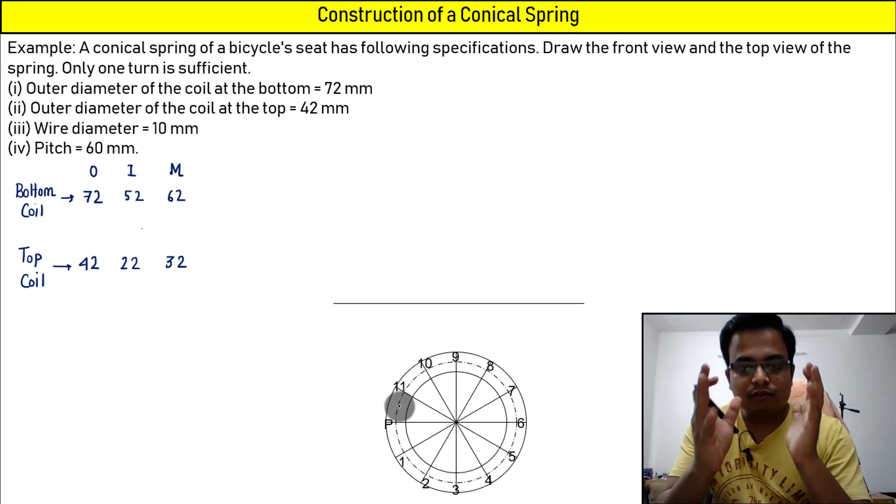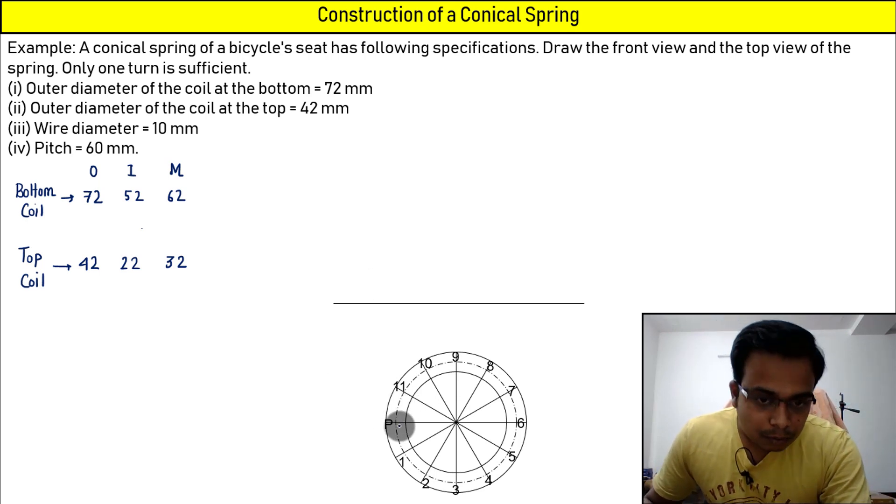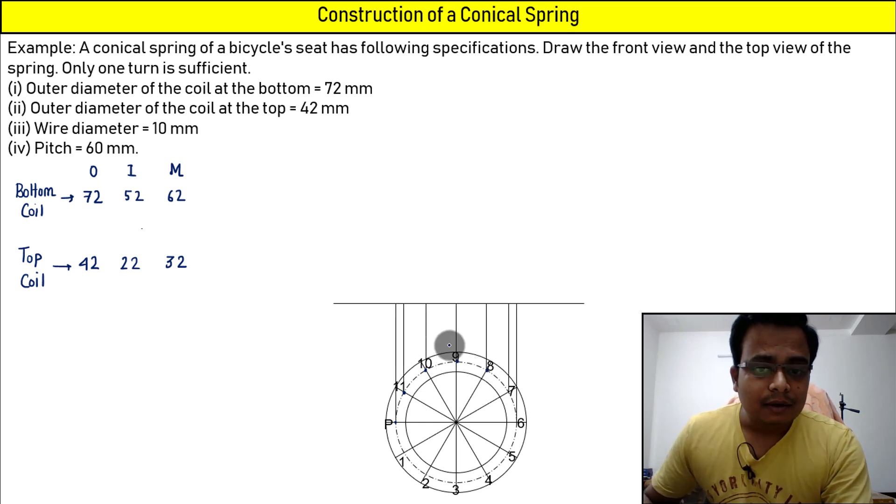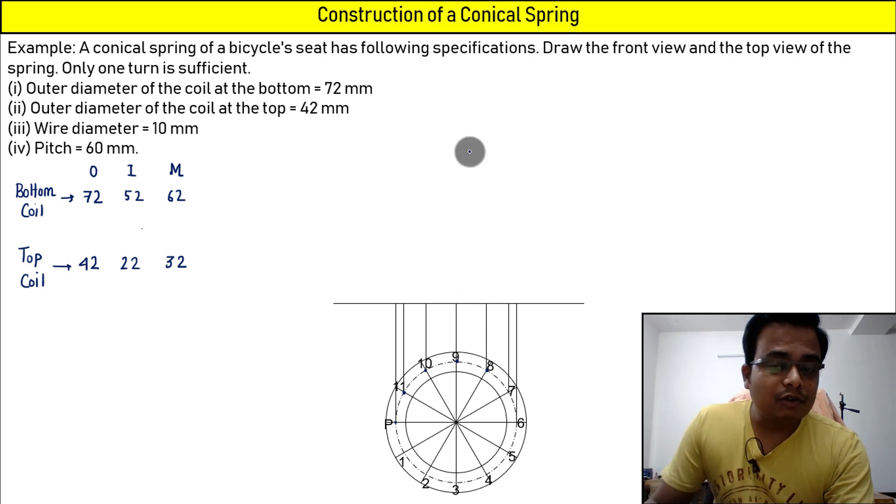Now when you take a look at this from the front, what would you see? You project the lines from these points, this mean diameter. Try to focus on the mean diameter and nothing else. Everything will fall in place with the help of wire diameter, don't worry.